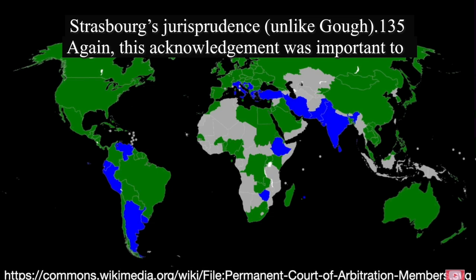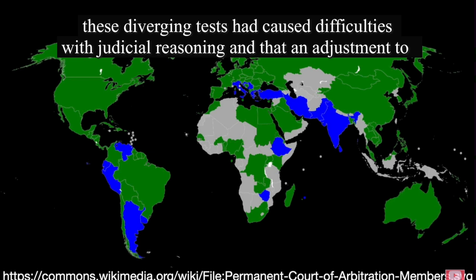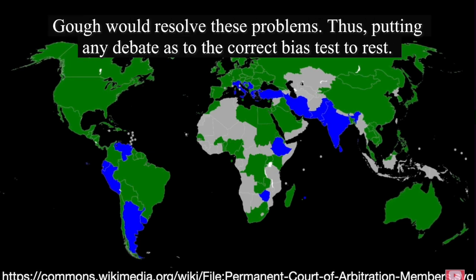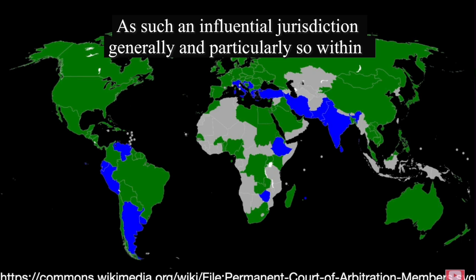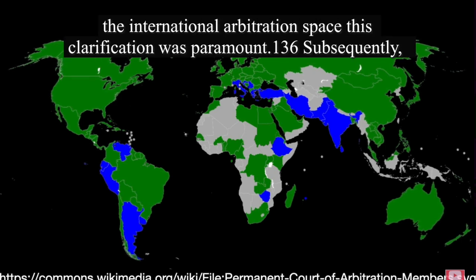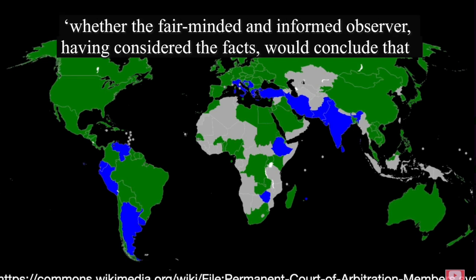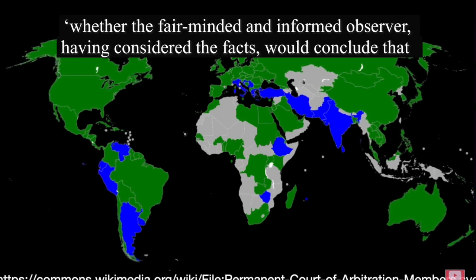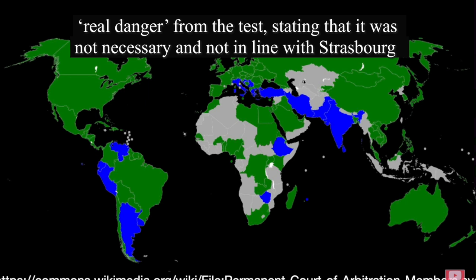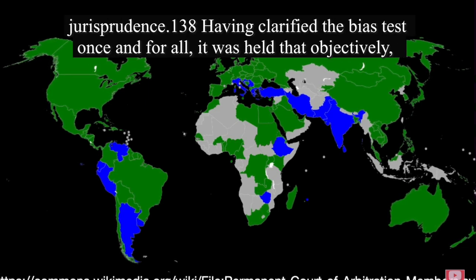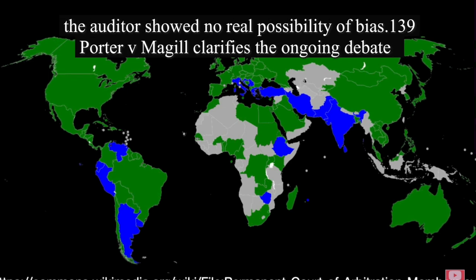Focus will be on Lord Hope of Craighead's reasons, as he gave detailed reasons concerning the apparent bias allegation, which were agreed. Lord Hope noted the Gough test had been criticised by Australia's High Court in Webb — also mentioned in Medicaments — due to the emphasis on the court's view and lack of public perception. As Australia's highest court, this criticism had weight and was important in ensuring that the UK did not fall out of touch with other Commonwealth jurisdictions. Lord Hope then recognised the reasonable apprehension test's adoption in many common law jurisdictions and its alignment with Strasbourg's jurisprudence, unlike Gough. This acknowledgement was important to ensure the UK remained in line with international best practice. His Lordship acknowledged that these diverging tests had caused difficulties with judicial reasoning and that an adjustment to Gough would resolve these problems, thus putting any debate as to the correct bias test to rest.